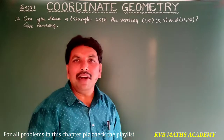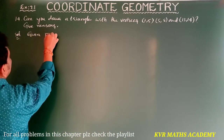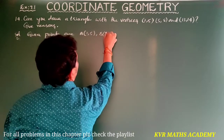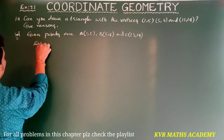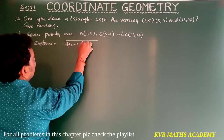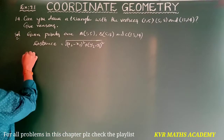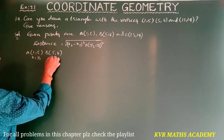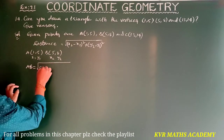Solution: given points are A(1, 5), B(5, 8), and C(13, 14). Using the distance formula: distance equals root of (x2 minus x1) whole square plus (y2 minus y1) whole square. Take points A(1, 5) as (x1, y1) and B(5, 8) as (x2, y2). AB equals root of (5 minus 1) whole square plus (8 minus 5) whole square.